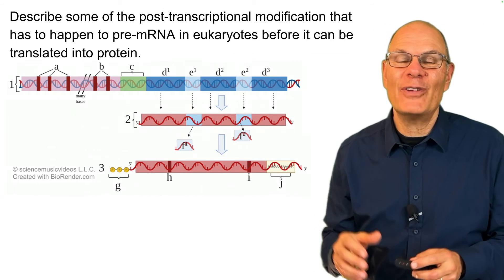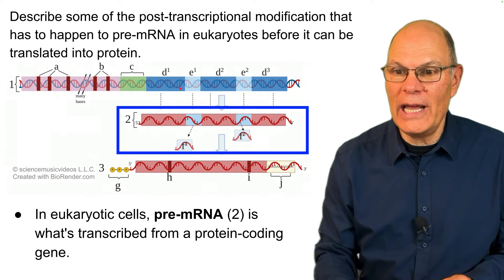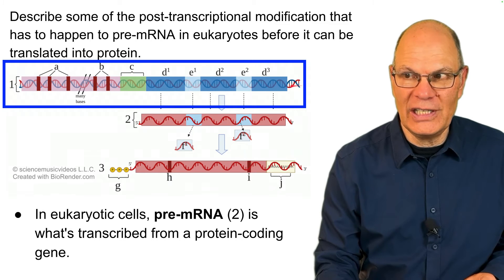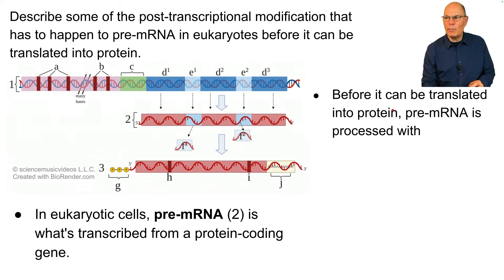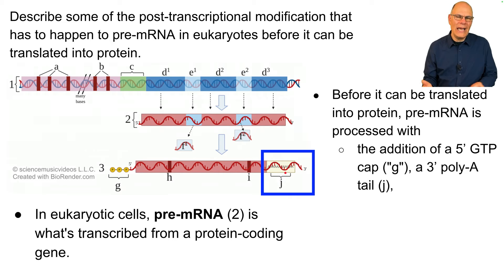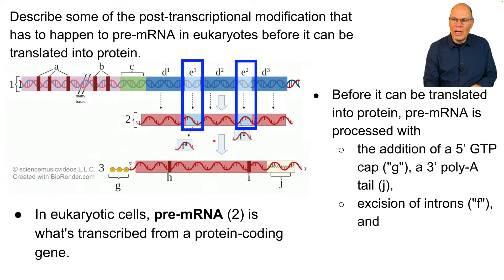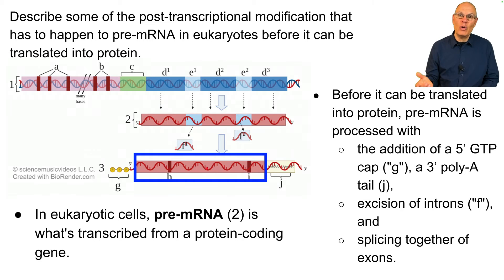In eukaryotic cells, pre-mRNA is what's transcribed from a protein-coding gene. Before it can be translated into protein, that pre-mRNA has to be processed in several ways. It has to get an addition at its five-prime end of a GTP cap and a three-prime poly-A tail — poly-A meaning adenine, adenine, adenine, adenine repeated. Introns — those intervening sequences that don't code for protein — need to be excised and cut out. Then the fragments consisting of the exons need to be spliced together, yielding mRNA that can be translated into protein.